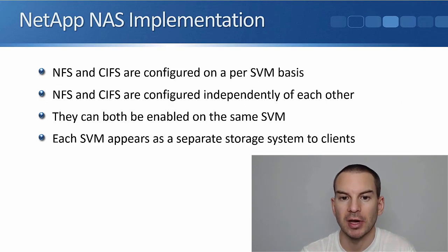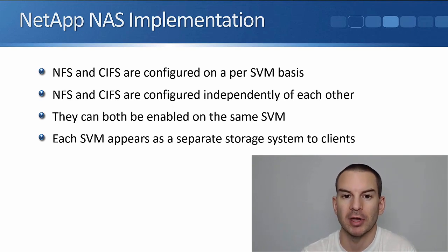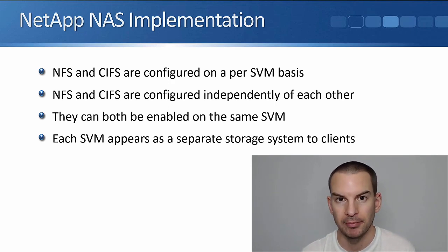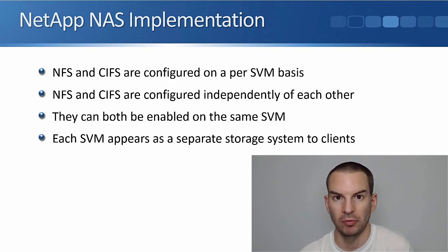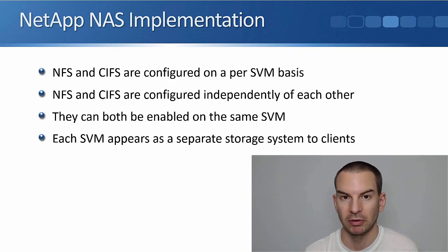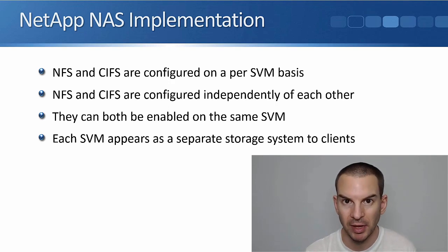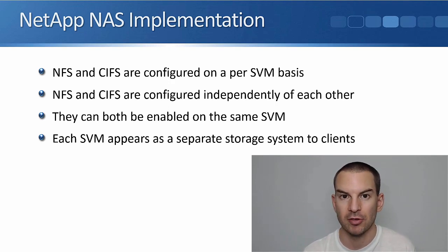NFS and CIFS are configured on a per SVM basis, and they are configured independently of each other. They can both be enabled on the same SVM — you could have one SVM with both NFS and CIFS enabled, or you could have a separate SVM for each. You could also have two different CIFS SVMs with different settings for each. Each SVM operates as a separate system and shows up as a separate storage system to your clients.